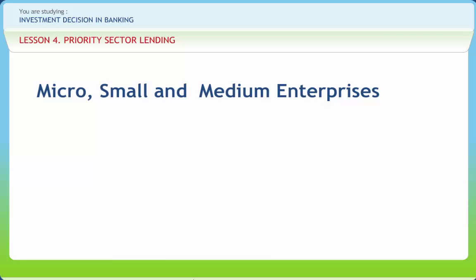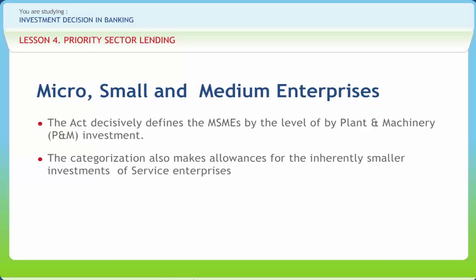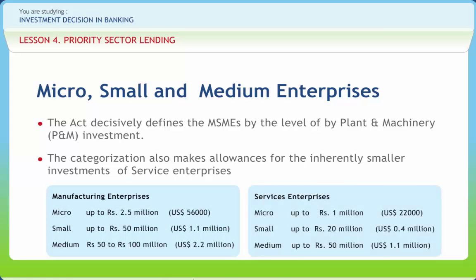The enterprise is engaged in the manufacture or production of goods pertaining to any industry specified in the first schedule to the Industries Development and Regulation Act 1951. The manufacturing enterprise is defined in terms of investment in plant and machinery. The enterprise is engaged in providing or rendering of services and is defined in terms of investment in equipment. A micro enterprise is an enterprise where investment in plant and machinery, original cost excluding land and building, does not exceed Rs. 25 lakhs.